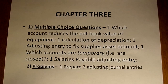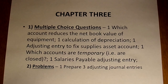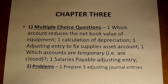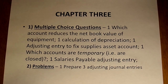For Chapter 3, one multiple choice question asks: what's the name of the account that reduces the net book value of equipment? Accumulated depreciation — hint, hint. One question requires you to actually calculate depreciation: the formula is cost minus salvage value divided by the number of years. One question will be: propose the adjusting journal entry to fix the supplies asset account — study the adjustment entry for supplies. One question asks what type of accounts are temporary: those are the accounts that are closed — Revenue, Expense, and Dividend.